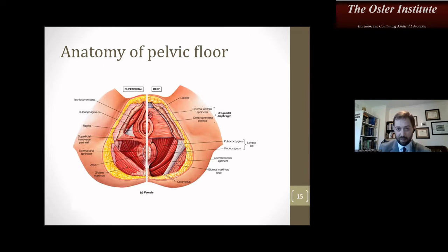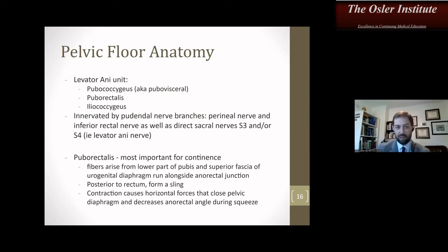Some pelvic floor basic anatomy: you can see the pelvic bowl muscles and the levator ani, which typically makes a U-shape posterior to the rectum and helps change the anorectal angle with defecation. The levator ani is made up of three muscles: pubococcygeus, puborectalis, and iliococcygeus. It is innervated by pudendal nerve branches, the perineal nerve, infrarectal nerve, as well as direct S3 and S4 nerve branches. The puborectalis is the most important for continence — its fibers form a sling, and contraction causes horizontal forces that close the pelvic diaphragm and decrease the anorectal angle during a squeeze.